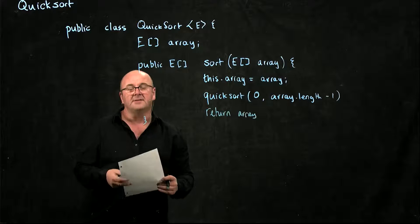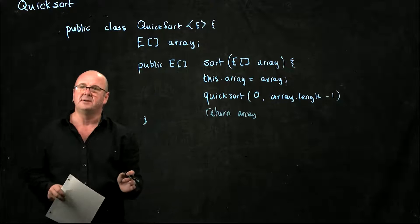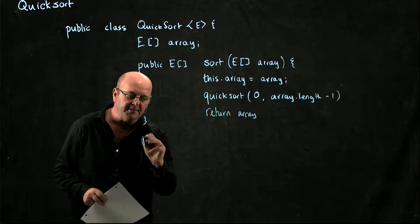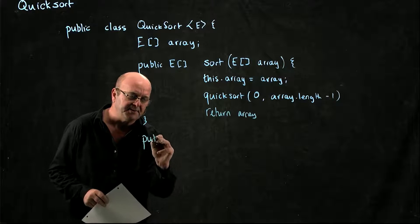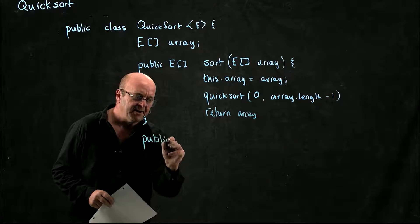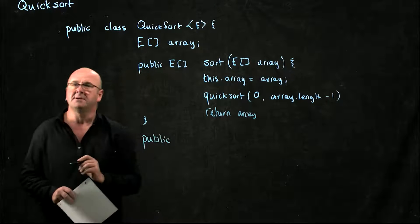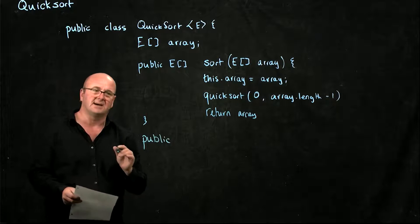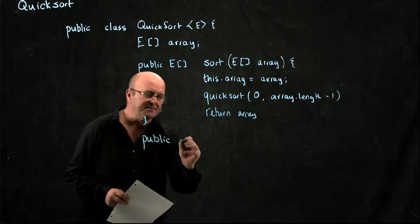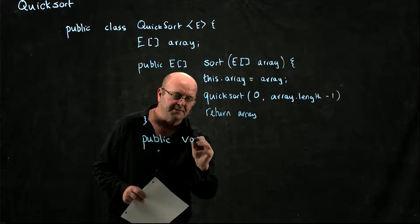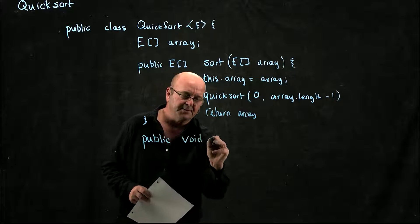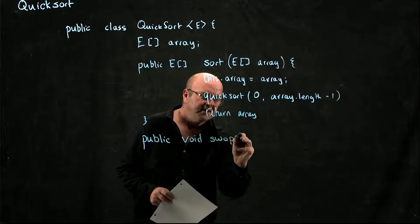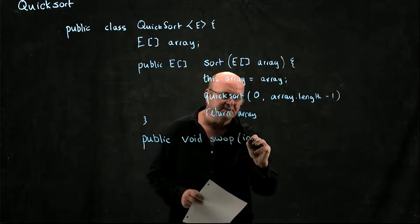The other thing I need for my quicksort method is a swap method. We've seen this before, but I just want to go over it because it's really helpful to have a very straightforward, very simple swap. Our swap method is just going to take two integers.